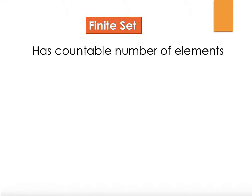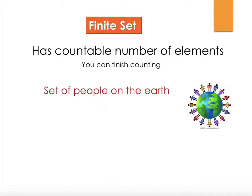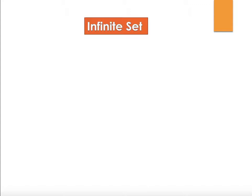What is a finite set? If a set has a countable number of elements — no matter how large — if you can finish counting at some point, it is a finite set. For example, the number of people on Earth is approximately 7.6 billion, which is a huge number but still countable. An infinite set, on the other hand, extends to infinity — we cannot finish counting, so it heads towards infinity.